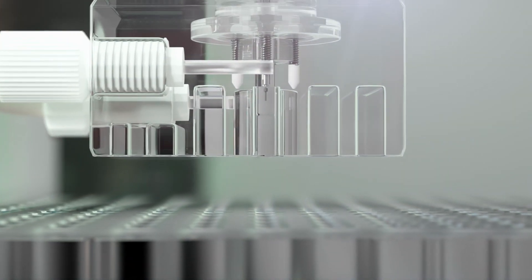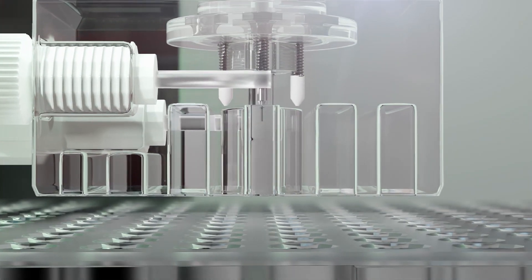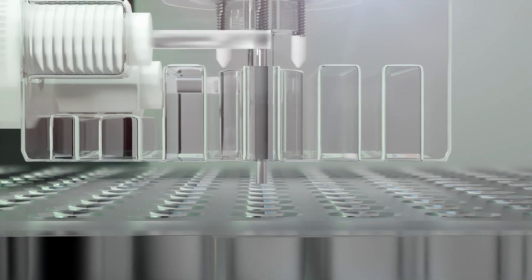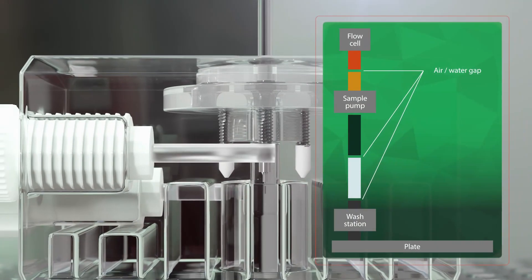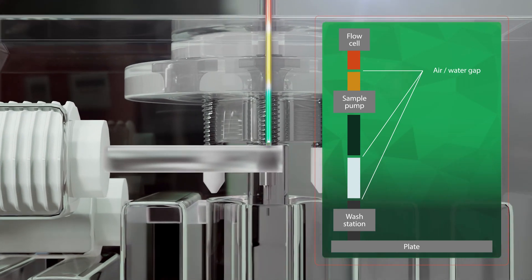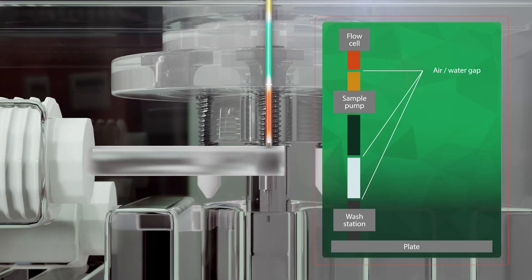The floating wash station moves with the probe to clean it between every sample, removing carryover and improving accuracy and reproducibility. The peristaltic sample pump facilitates precise measurement and reduces clogging, with a broad range of sample flow rates.